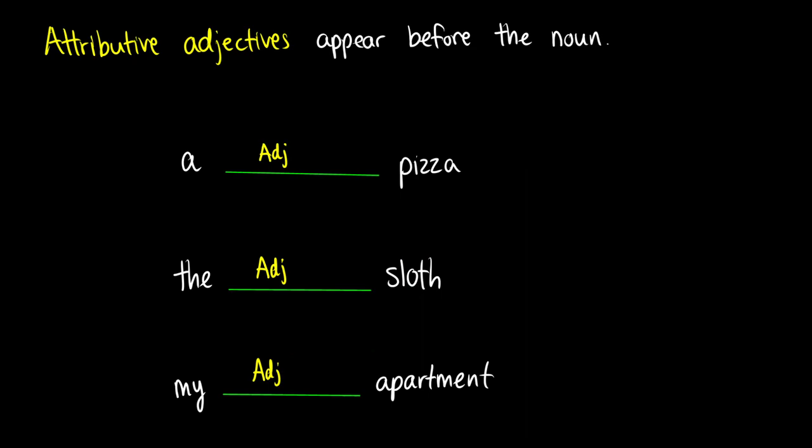Now there's two different positions that adjectives can appear in and we give each of these positions a different name. The typical position we see adjectives in are right before a noun and we call these attributive adjectives. So these attribute the quality directly to the noun. So for instance if we have this frame here a blank pizza where we have an adjective describing the pizza we could say something like a delicious pizza. Or let's say it's a pizza that's been out there for a long time we'll call it a moldy pizza. We can have a sloth for instance. Maybe it is an orange sloth. Maybe it is a fast sloth. We could describe it in many different ways. Same with apartment. So my tiny apartment or my new apartment.